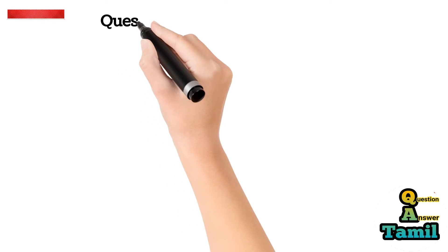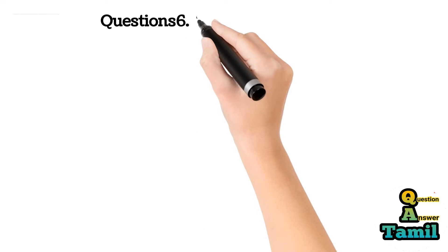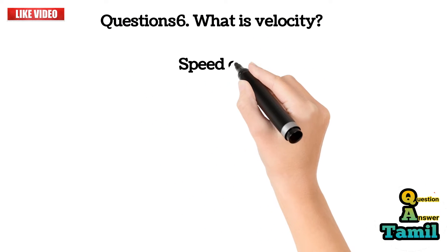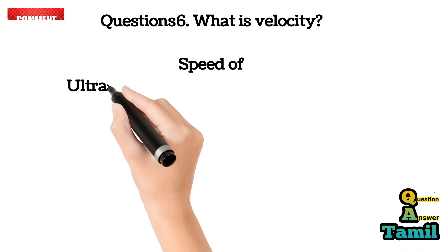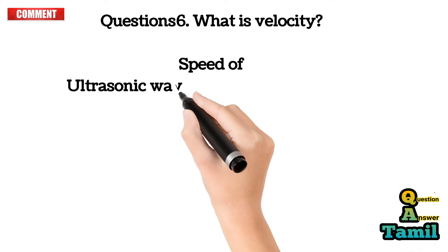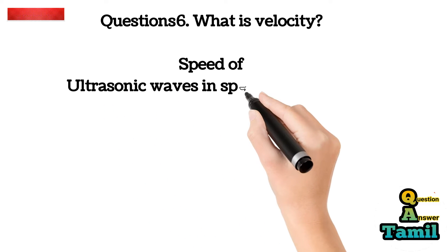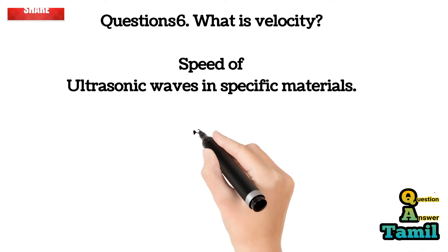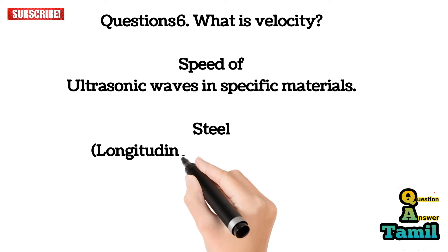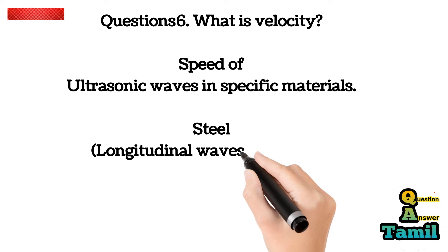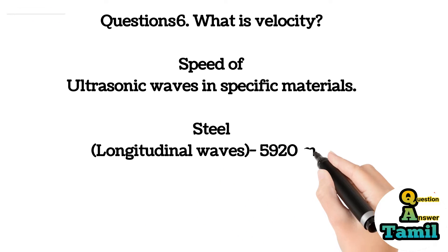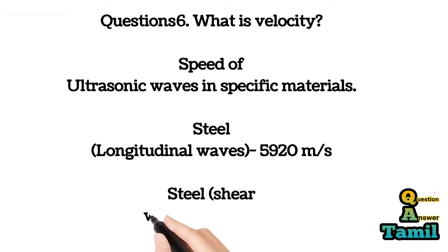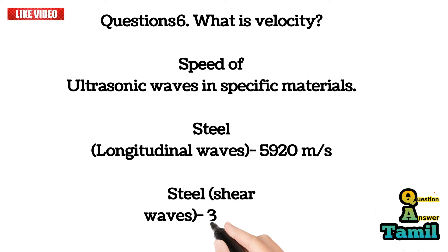Question 6: What is velocity — speed of ultrasonic waves in specific materials? Steel longitudinal waves: 5,920 meters per second. Steel shear waves: 3,250 meters per second.